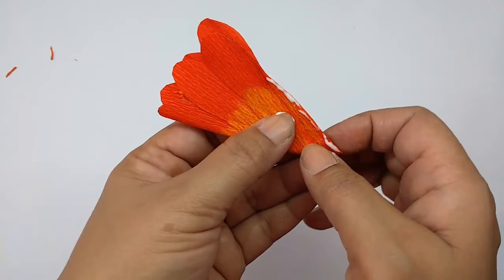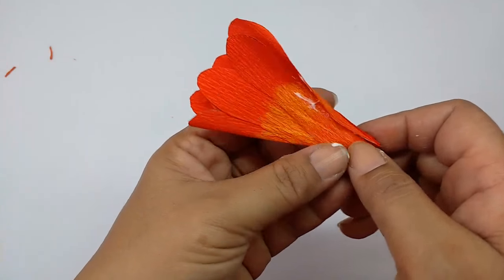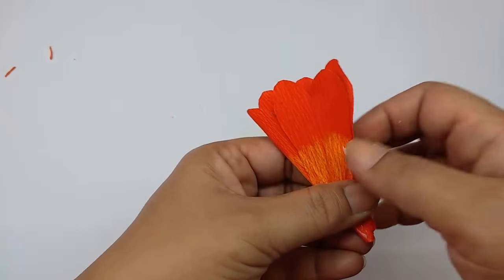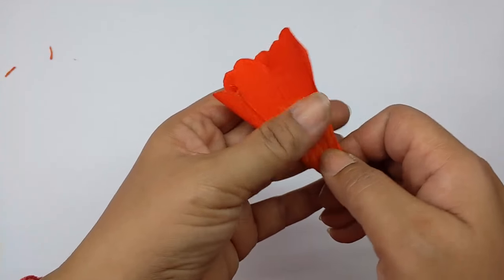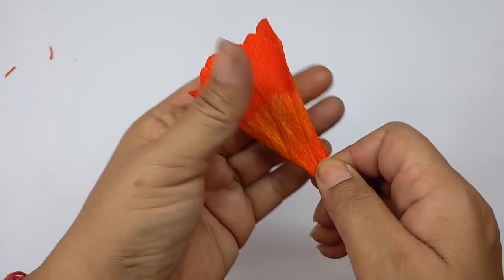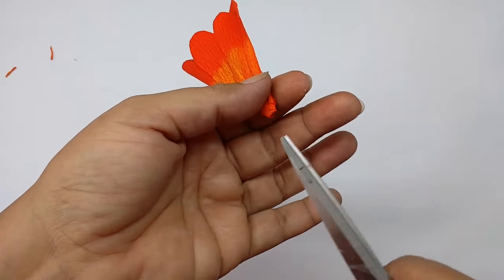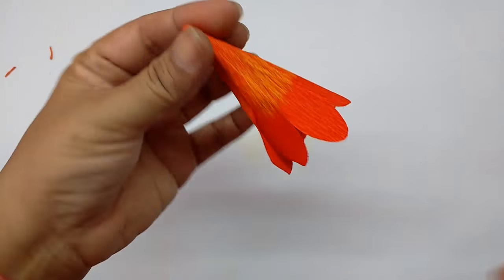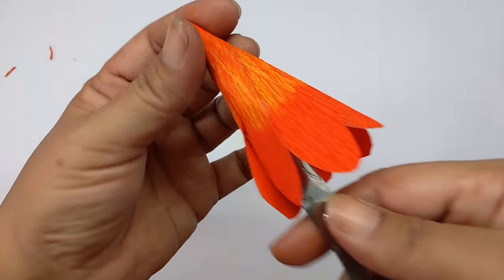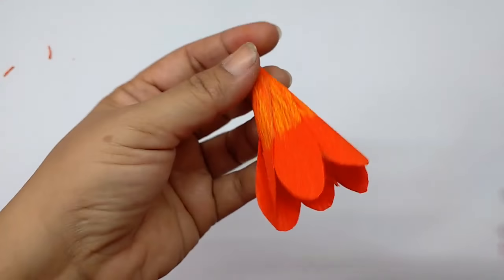Apply glue on one side of the petal and stick this over to form a funnel. Before this completely dries, just open out the bottom, make it circular, either using scissors or just press it open like this so it becomes circular.